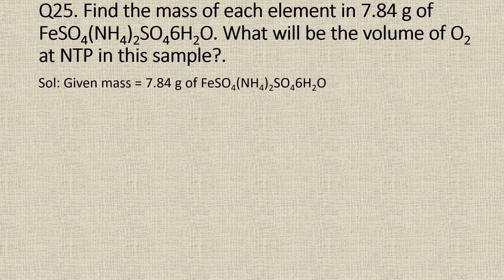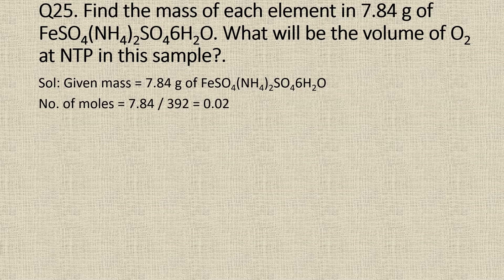The mass of ferrous ammonium sulfate is 7.84 grams. First, we need to find the moles of ferrous ammonium sulfate. Moles of ferrous ammonium sulfate will be weight divided by molecular weight, which is equal to 7.84 divided by 392, which is equal to 0.02 moles.